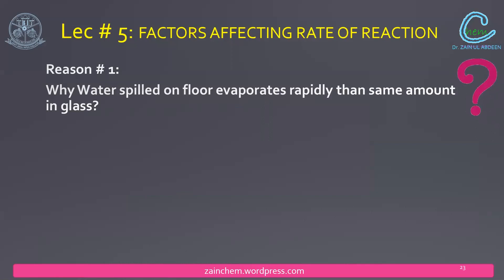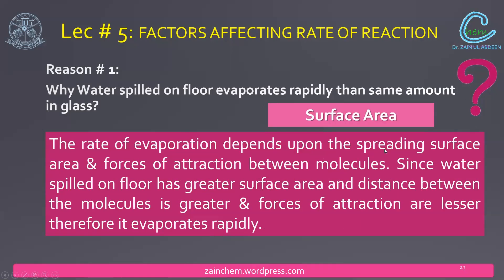Water in a glass will not evaporate so quickly, but if it is spilled out, it will evaporate quickly. The reason is surface area. When water is spilled, the surface area increases. When the surface area increases, the rate of evaporation increases. Water in the glass has a reduced surface area, so the rate of evaporation is slow.